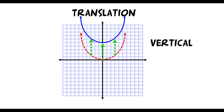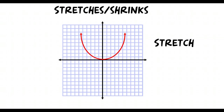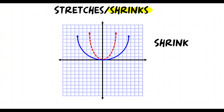The last type of transformation is called a stretch or a shrink. A stretch actually stretches all of your y-values up, which is why you end up with a skinnier parabola. A stretch makes the graph look skinnier, and a shrink actually makes the graph fatter. So for a shrink, we start with our parabola and it gets a little bit fatter. A shrink makes it fatter; a stretch makes it taller.